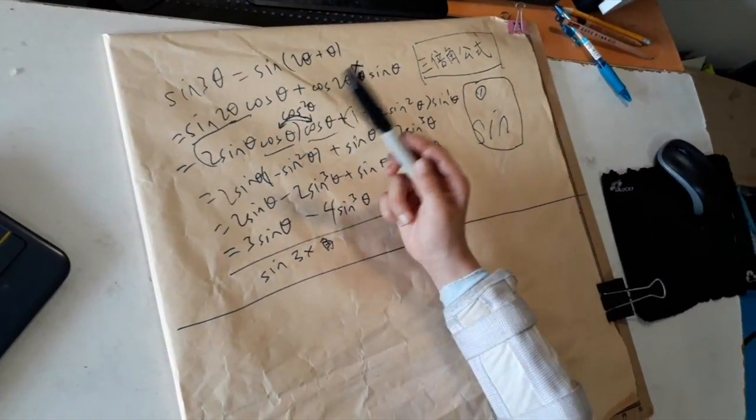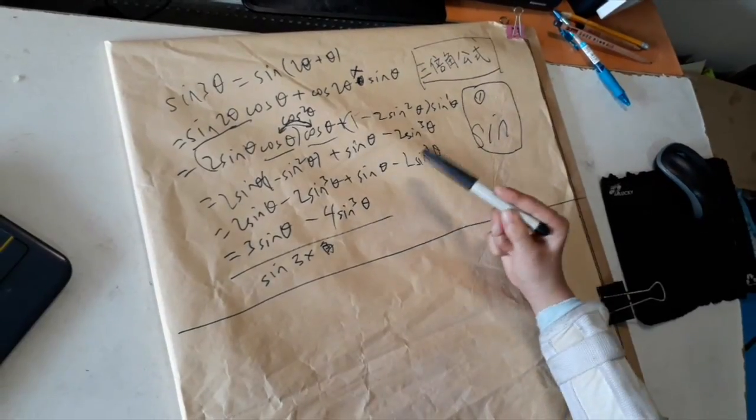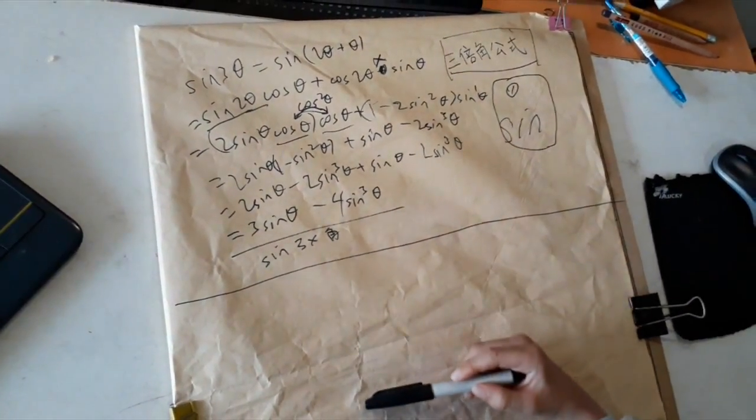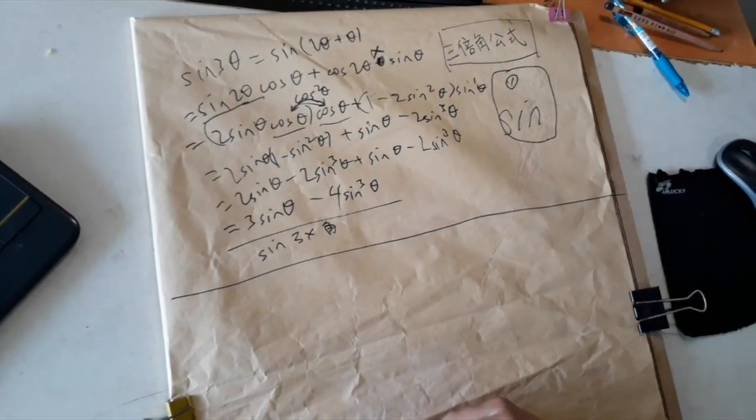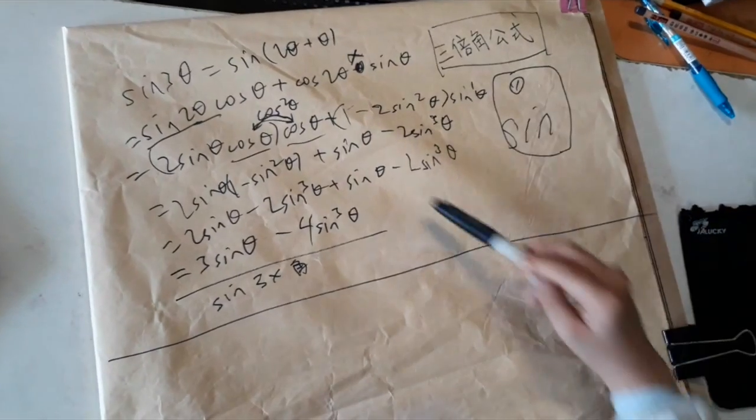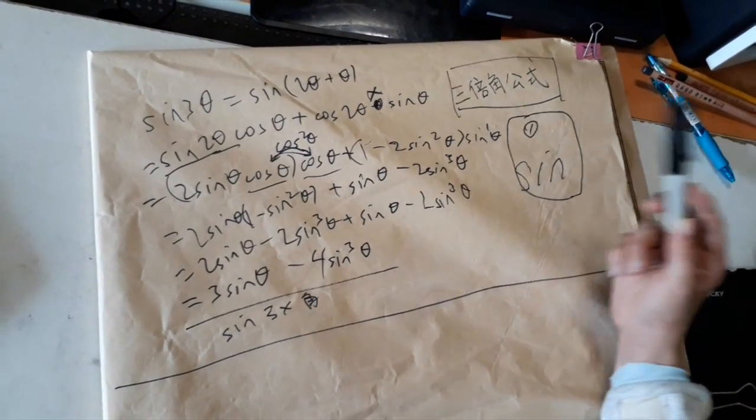First of all, sine 2 theta, we already know what sine 2 theta is. It's 2 sine theta times cosine theta. And cosine 2 theta is cosine squared theta minus sine squared theta. Or you can write it another way, 1 minus 2 sine squared theta.